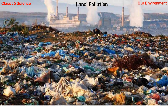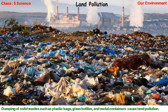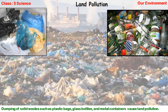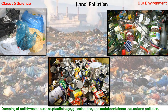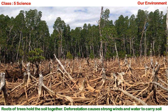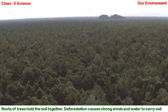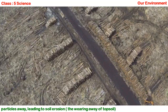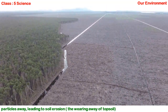Land pollution. Dumping of solid waste such as plastic bags, glass bottles, and metal containers causes land pollution. Roots of trees hold the soil together. Deforestation causes strong winds and water to carry soil particles away, leading to soil erosion — the wearing away of topsoil.